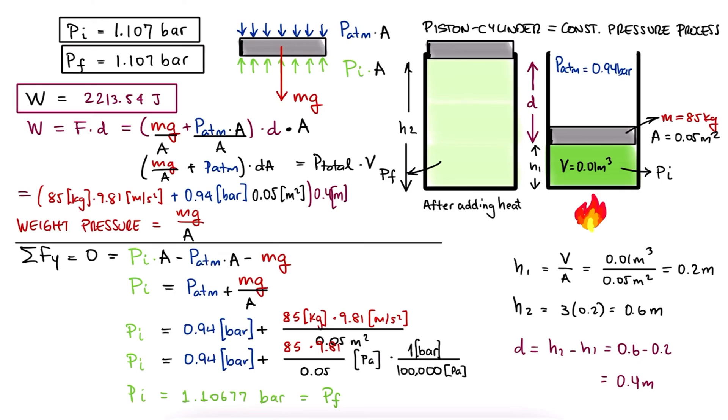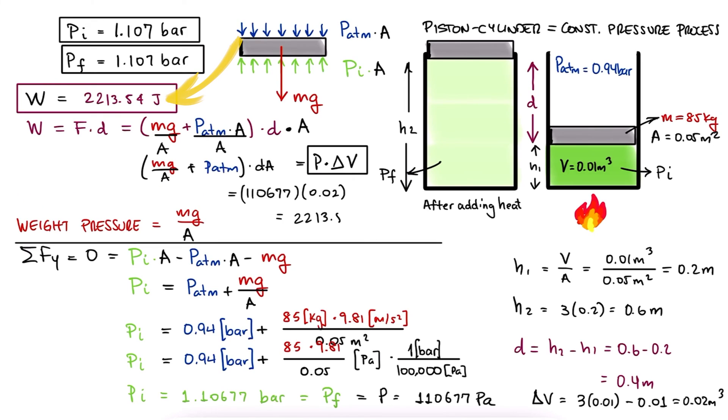Since D is the change in height between the initial and the final state, this volume corresponds to the change in volume. Therefore, this work energy is equal to either our first expression, or just P delta V. And let's check this. The absolute pressure inside the cylinder, which remained constant before and after adding the heat, is 110,000 Pascals, and the change in volume is triple of 0.01 minus 0.01. This results in 2213.54 joules as well.